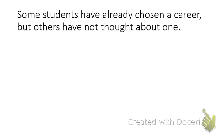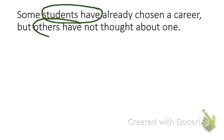Here is our second sentence: Some students have already chosen a career, but others have not thought about one. In this sentence, we have two subject-verb combinations: students have and others have. When we look at the rest of the words around them, we can tell that we have two independent clauses, which means we have a compound sentence.